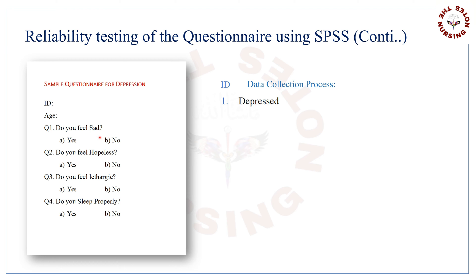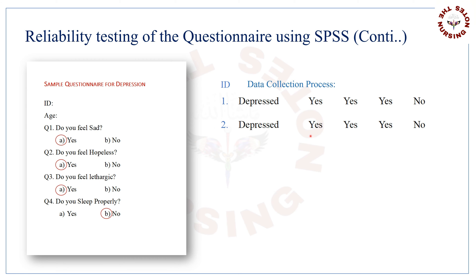Question 1: Do you feel sad? If the patient is depressed, there are increased chances the reply will be yes. Question 2: Do you feel hopeless? The depressed will reply yes. Question 3: Do you feel lethargic? Also yes. Question 4: Do you sleep properly? Note that depressed patients cannot sleep properly, so there are increased chances the answer may be no. There are increased chances that other depressed respondents will reply in the same manner, but there is also a chance of little variation in answers.